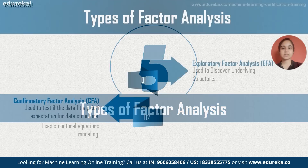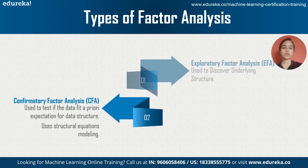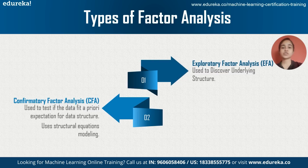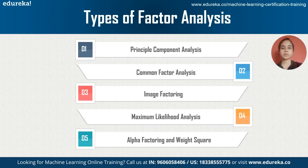Factor analysis can be broadly classified into two types: EFA and CFA. Exploratory Factor Analysis (EFA) is used to discover the underlying structure in the data using a correlation matrix — it is used for getting insights. Confirmatory Factor Analysis (CFA) is based on the insights derived in EFA and is used to test those expectations, making use of equations to model the structure.